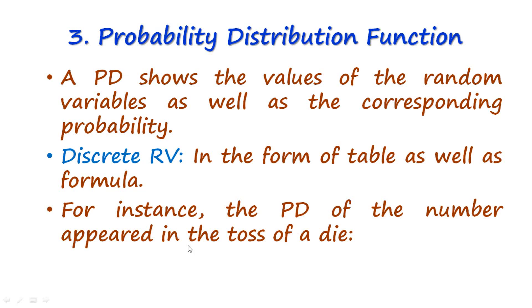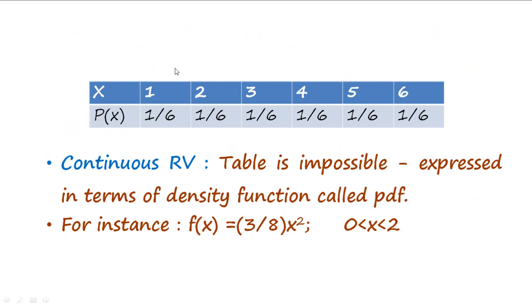For instance, the probability distribution of the number appearing in the toss of a die can be shown as a table. The random variable X takes the value 1 when face 1 appears, 2 when face 2 appears, and so on up to 6. The corresponding probability associated with each value is 1/6, since each face is equally likely. This is the probability distribution of X, and since it is discrete we can represent it in terms of a table.